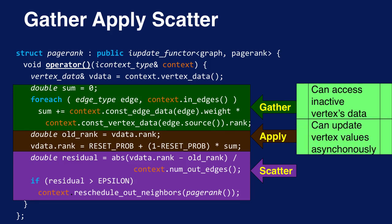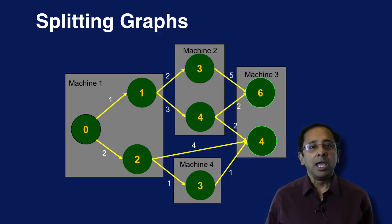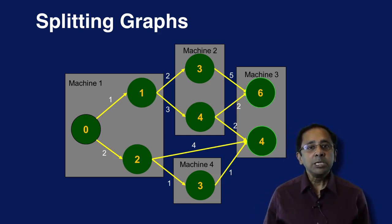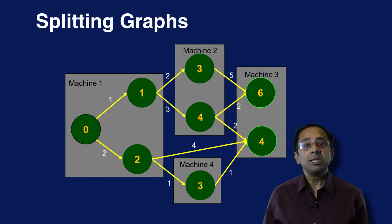Further, a vertex can update its value asynchronously — that is, as soon as it receives an update, without having to wait for all nodes as in BSP. This often helps iterative algorithms like PageRank converge faster. When the graph is large and must be split across machines, BSP cuts the graph along edges, so every cut edge results in machine-to-machine communication.